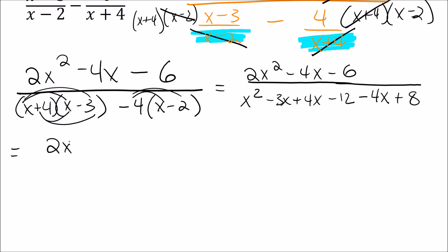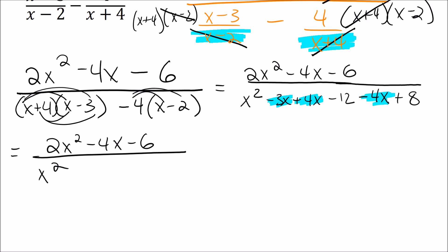We still have 2x squared minus 4x minus 6 on top. Then combining like terms on the bottom: x squared, then negative 3x plus 4x minus 4x gives negative 3x, and negative 12 plus 8 gives minus 4. So the denominator is x squared minus 3x minus 4.